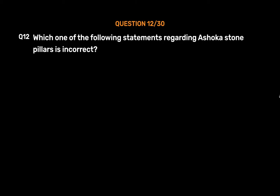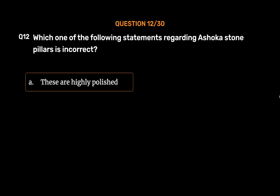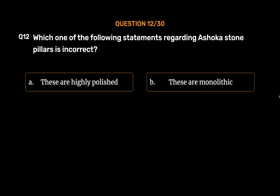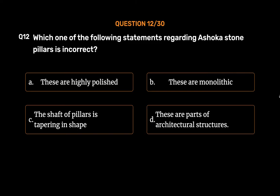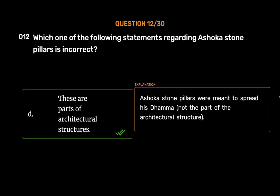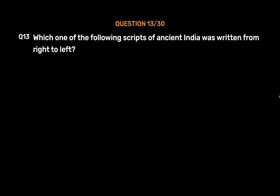Question number twelve: Which one of the following statements regarding Ashoka's stone pillars is incorrect? Option A: These are highly polished, Option B: These are monolithic, Option C: The shaft of the pillars is tapering in shape, Option D: These are parts of architectural structures. The correct answer is Option D. Ashoka's stone pillars were meant to spread his Dhamma and were not part of any architectural structure.